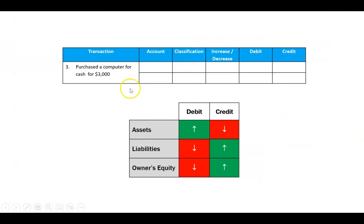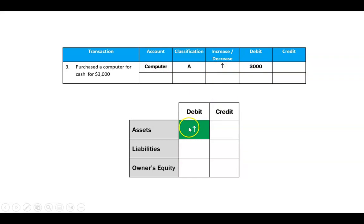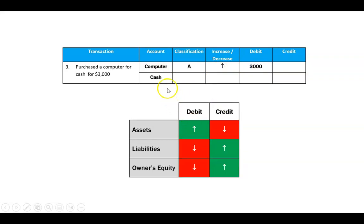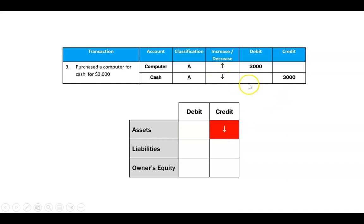Transaction number three: purchase a computer for cash for $3,000. The business has a new computer — that's an asset, and that asset is increasing, so the rule says that should be a debit. What else happened? We had to give up some cash. Cash is an asset; it's decreasing, and the rule says that should be a credit. We have one asset going up and one asset going down — as long as our debits equal our credits, we're all good.